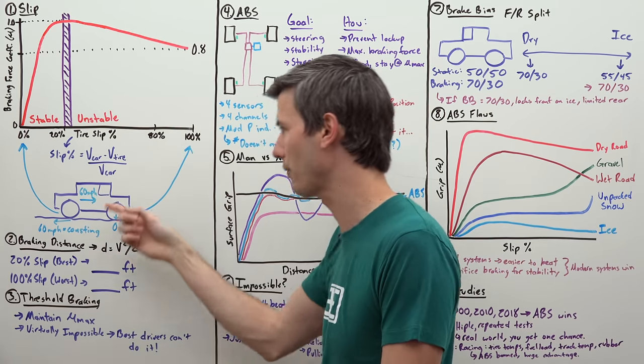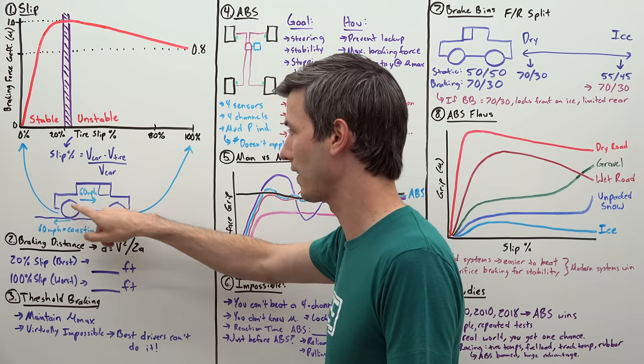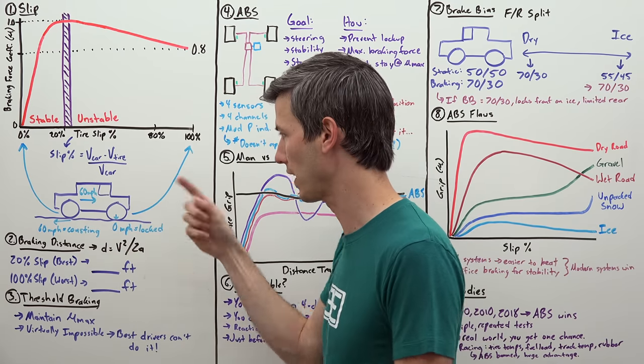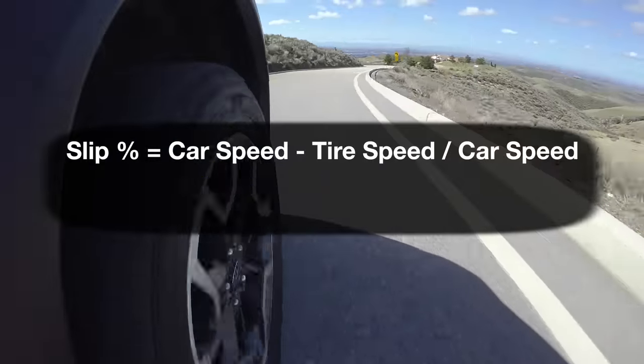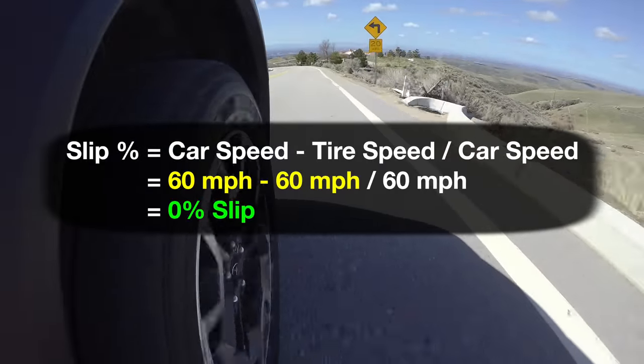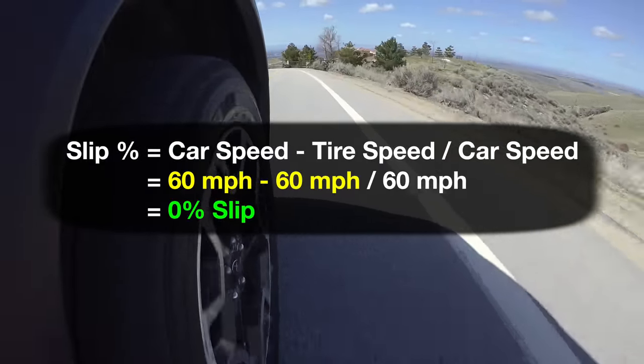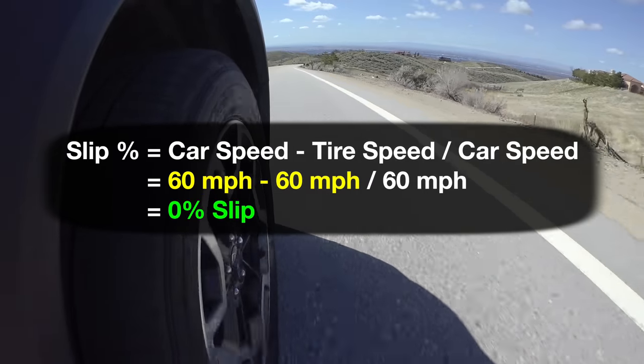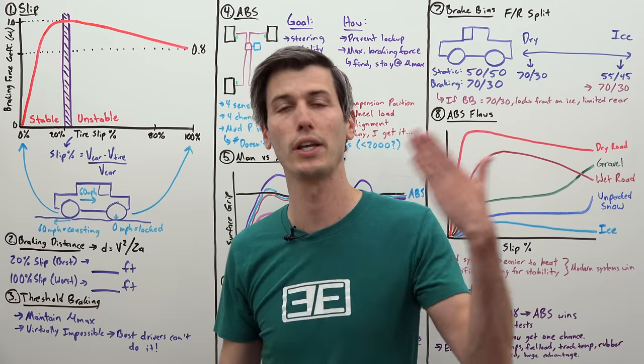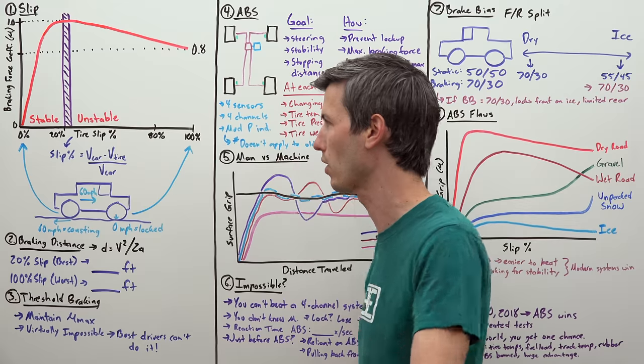Simple example: if you have a car traveling at 60 miles per hour and that rear wheel is spinning such that the outside of that tire is traveling at 60 miles per hour, well then you have 60 minus 60 which gives you 0, which means you have 0% slip. There is no relative motion there because the car speed and the tire speed are matched. You have no tire slip, you're neither accelerating nor decelerating, you're simply coasting along.